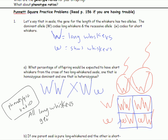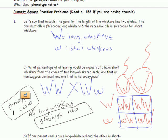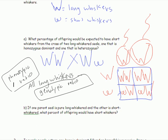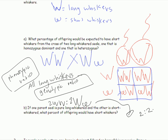Now, what about the genotypic ratio? The genotypic ratio is two big WW to two big W little w — which reduces to one to one. Do you guys see the difference between phenotypic and genotypic ratios now?